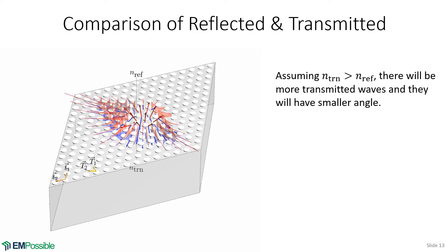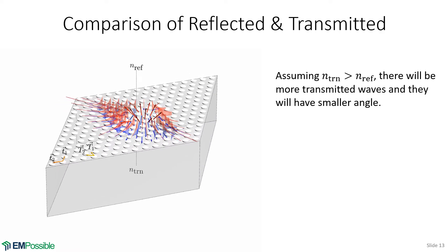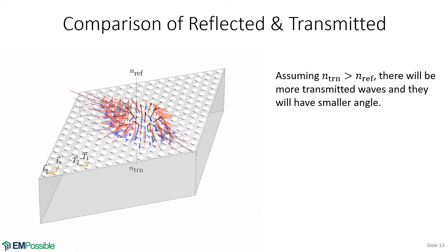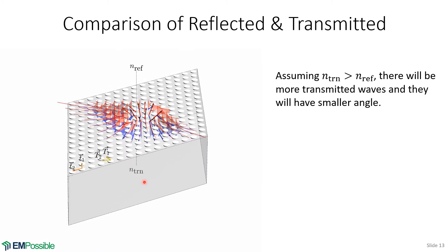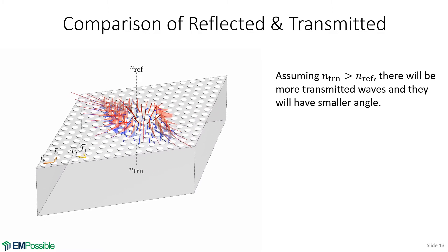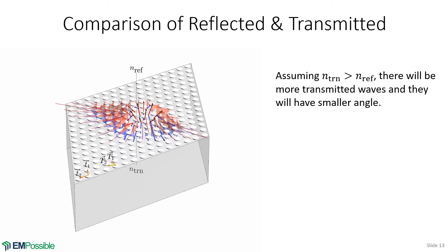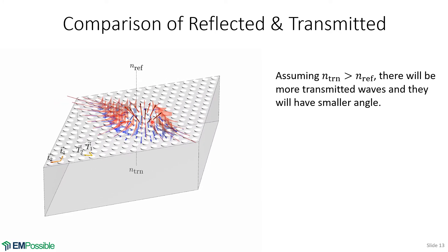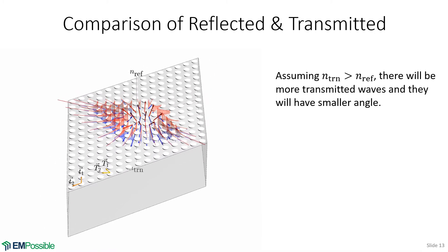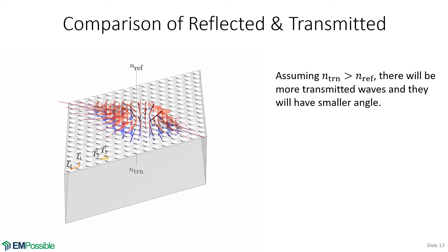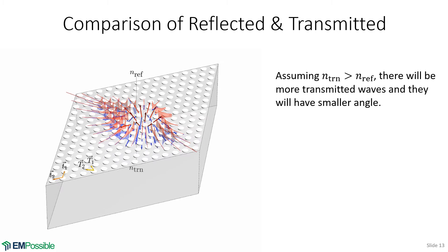Looking at reflected and transmitted together, they share the same tangential components — only the normal component differs, calculated from the dispersion relation using each medium's refractive index. With different refractive indices on the reflection and transmission sides, there are cases where a reflected order is cut off and evanescent while the corresponding transmitted order is not. In the high-index medium, we will have more diffraction orders, and for the same diffraction order above and below the grating, the ones below will have a smaller angle.